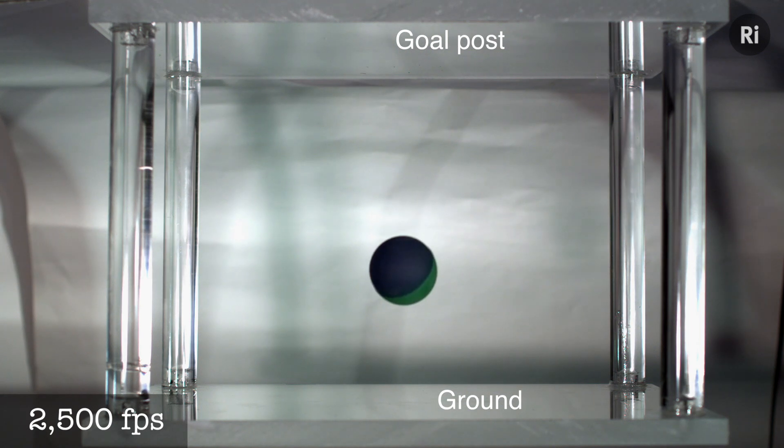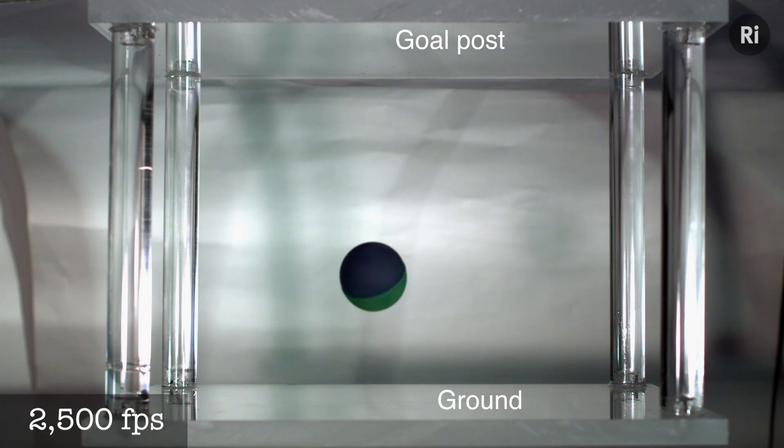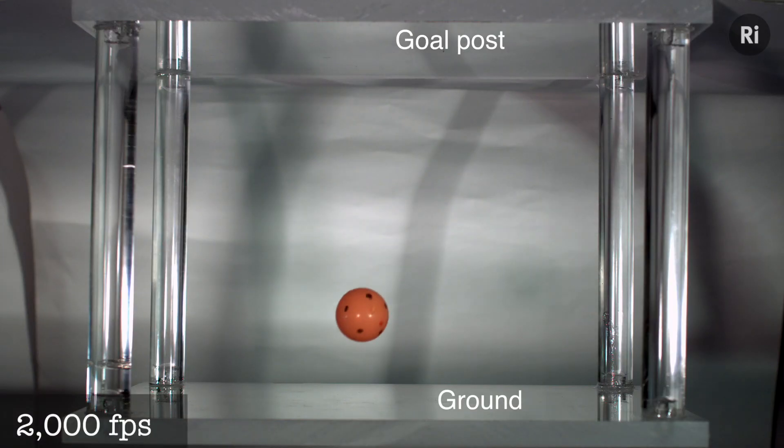And then on the second bounce, this is the bounce that corresponds to Lampard's shot hitting the ground inside the goal. The ball again grips the perspex and even more of that forward momentum is transferred to the perspex so the ball actually turns around.